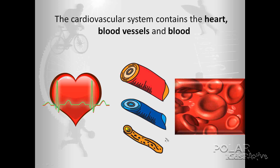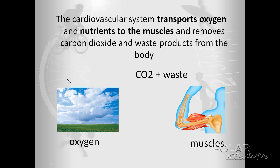The cardiovascular system contains the heart, blood vessels and blood. The cardiovascular system transports oxygen and nutrients to the muscles and removes carbon dioxide and waste products from the body.